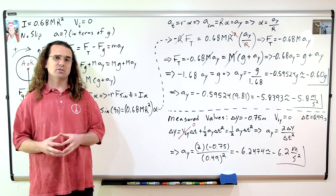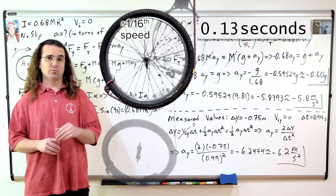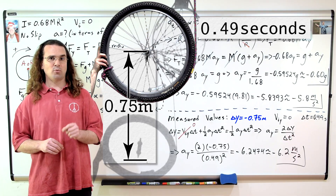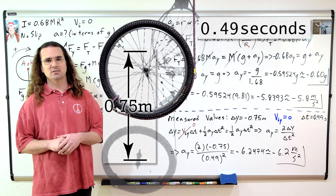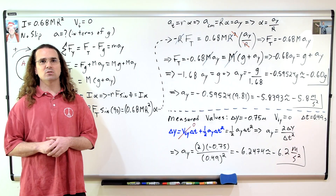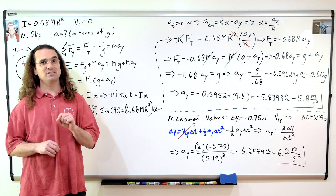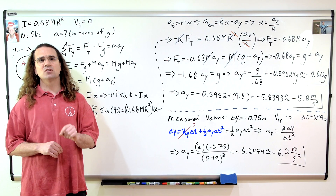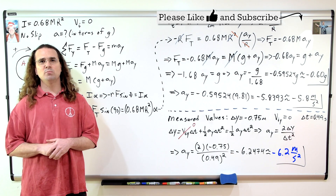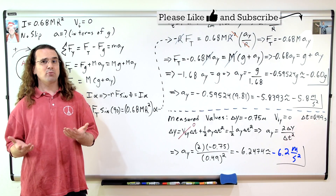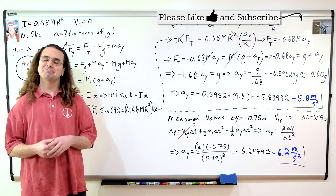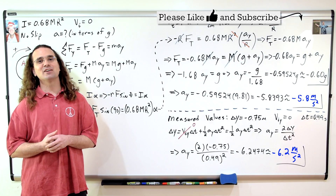I want to also compare this to a measured result. The wheel takes 0.49 seconds for its center of mass to displace downward 0.75 meters, starting from rest. Using the uniformly accelerated motion equation — displacement equals initial velocity times change in time plus one-half times acceleration times change in time squared — we solve for the linear acceleration and get negative 6.2 meters per second squared, which is pretty close to negative 5.8 meters per second squared. That is nice. Thank you very much for learning with me today. I enjoyed learning with you.